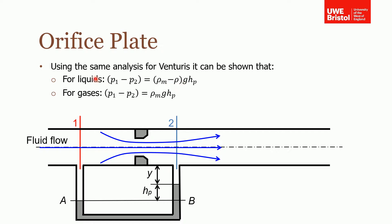Using the same analysis for the Venturi we can show that for liquids the change in pressure is equal to the density of the manometer minus density of the fluid in your pipe times G times HP. And for gases that term can be neglected because it's small compared to the density of the fluid in the manometer.